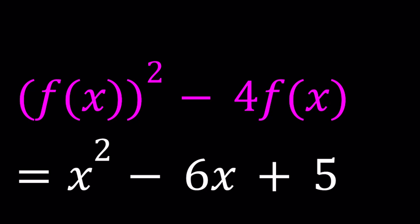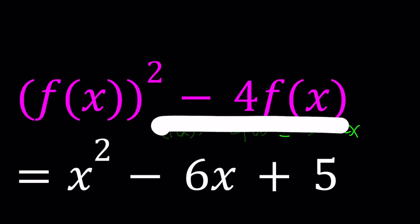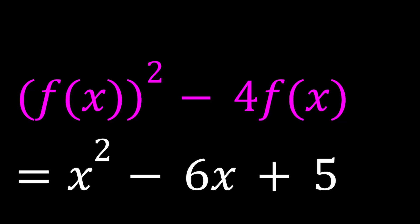Now, first of all, I thought about a different version of this problem. Let me share with you what I had in mind: f of x squared minus 2 times f of x equals x squared minus 2x. Then I thought about it, and this would be too easy. Let's make it a little bit more ambiguous, not too much, but a little bit. So here's the equation we have, and we're going to be solving for f.